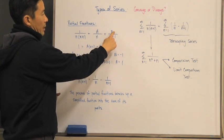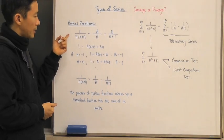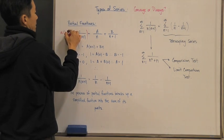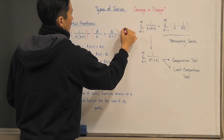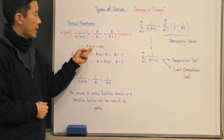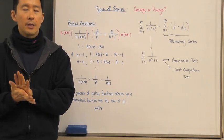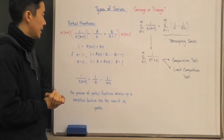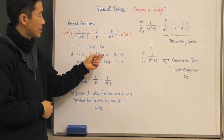So we have A over n plus B over n plus one. I'm going to multiply both sides by n times n plus one, which gives us the equation: one equals A times n plus one plus B times n. Now we want to find what the parameters A and B are. Let n equal negative one: one equals A times zero minus B, therefore B equals negative one.